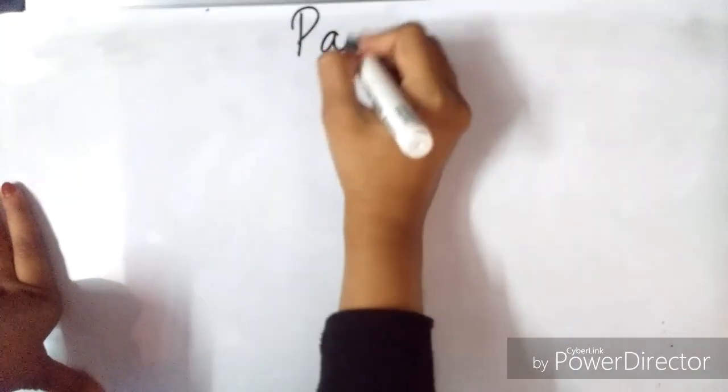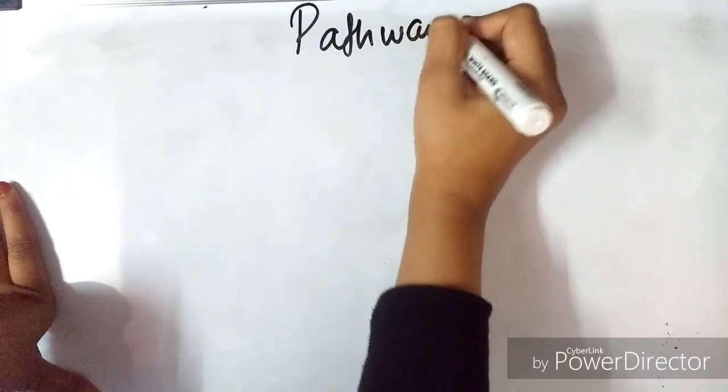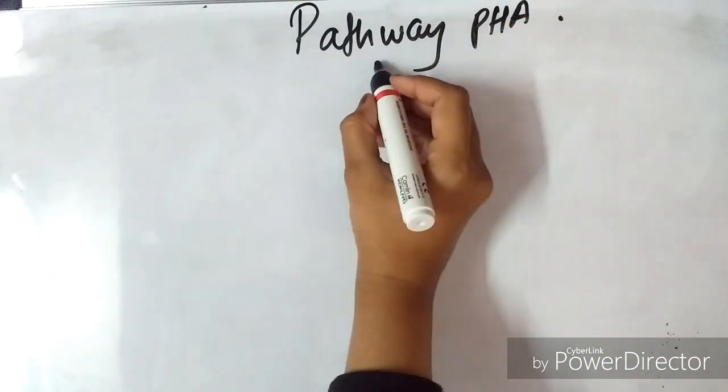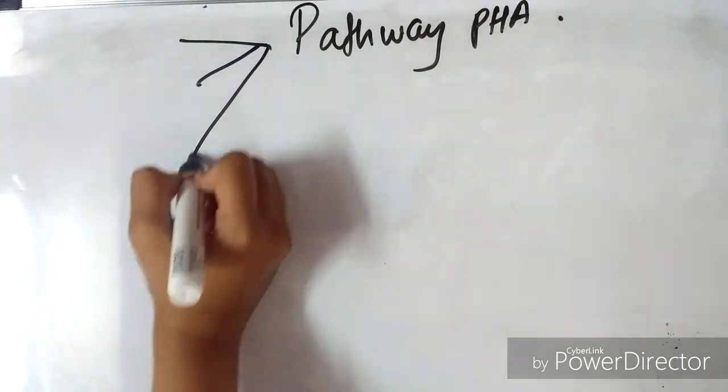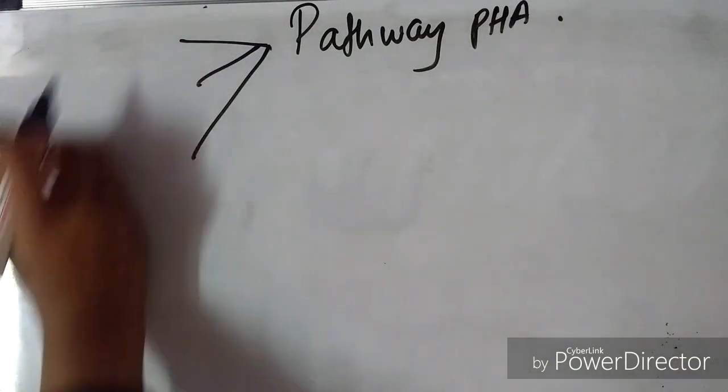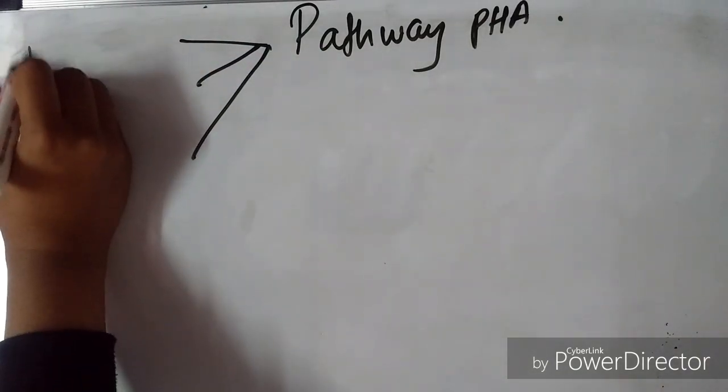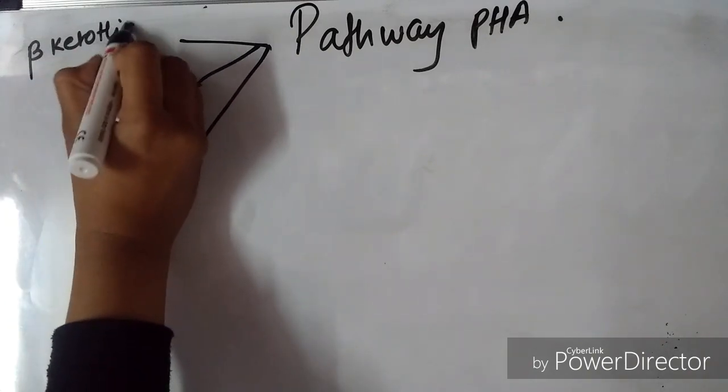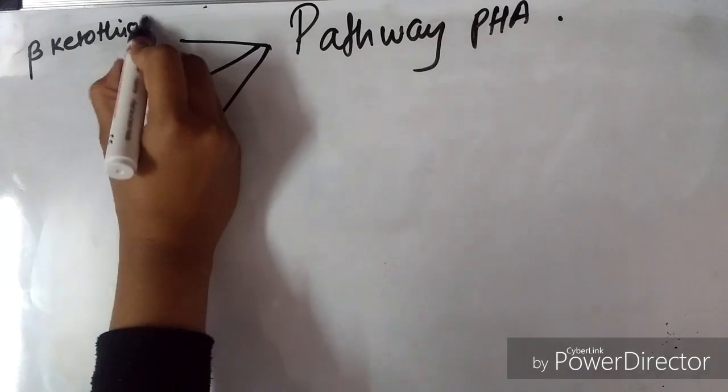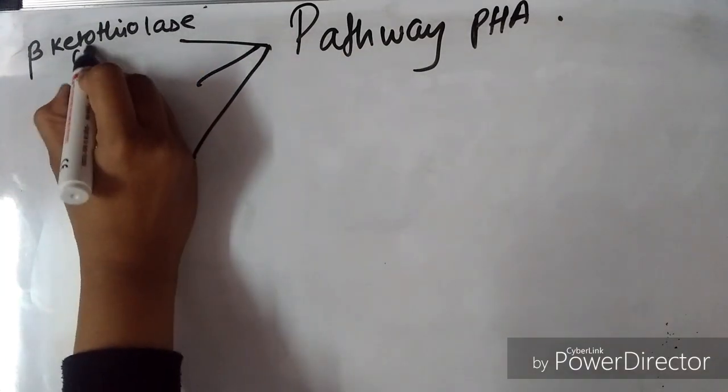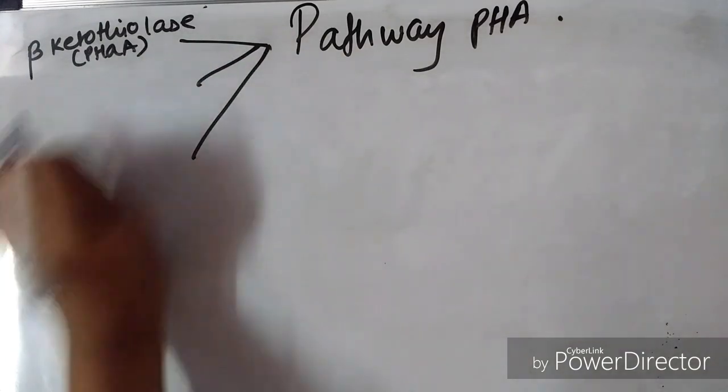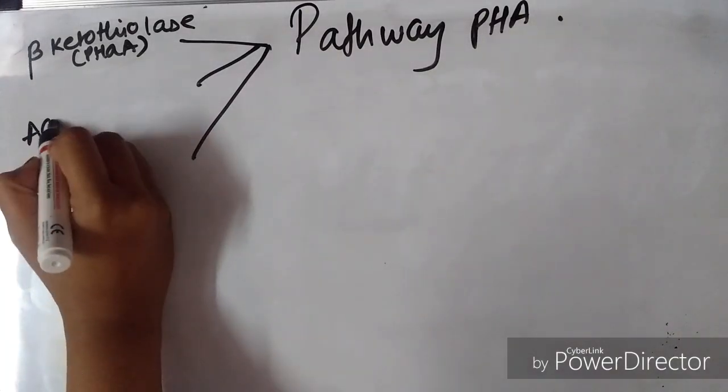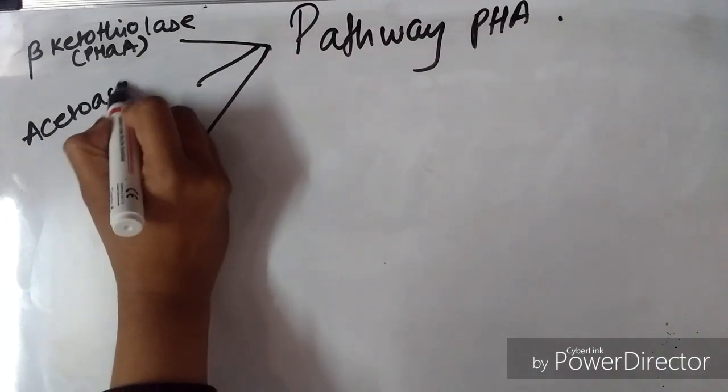Now we will see the pathway which the bacteria typically perform to form PHA inside the cell. There are three main important enzymes in the biosynthesis of PHA. The first is beta-ketothiolase abbreviated as PhaA, the second is acetoacetyl-CoA reductase abbreviated as PhaB, and the third is PHA-synthase abbreviated as PhaC.